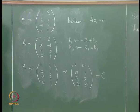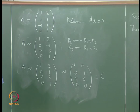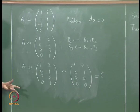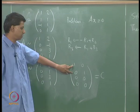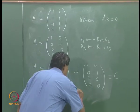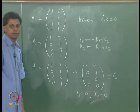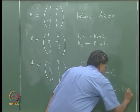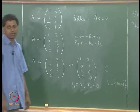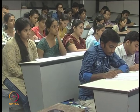Looking at the final matrix C: the last three equations are redundant. The first equation gives x1 = 0 and the second gives x2 = 0. Since there are only 2 unknowns, the solution set S = {(0, 0)}. This system has only the trivial solution.